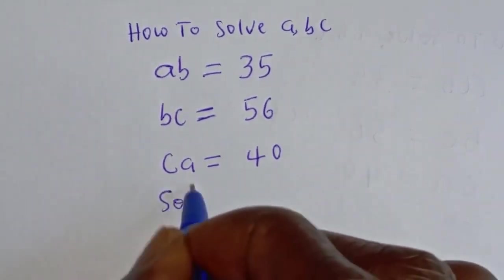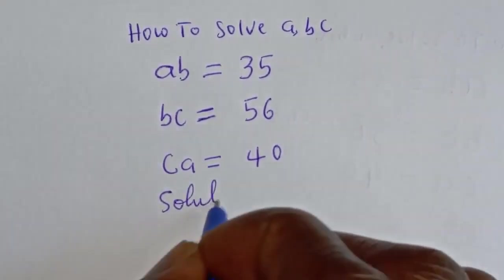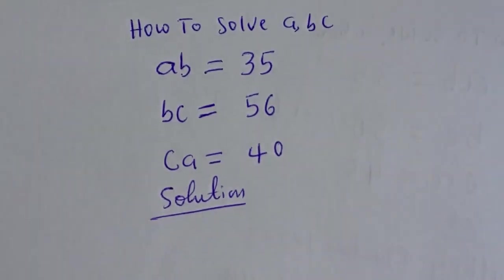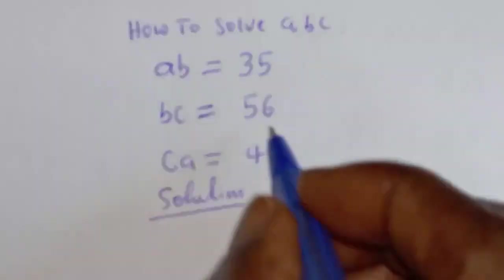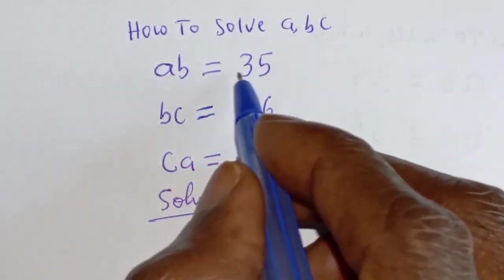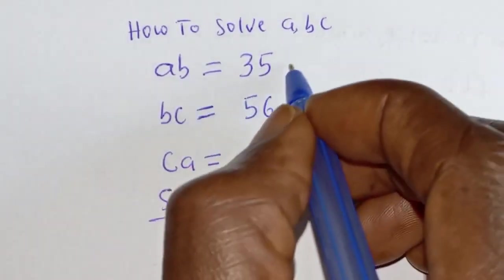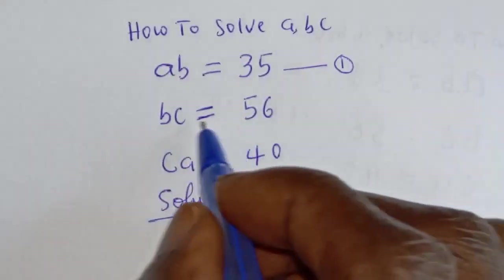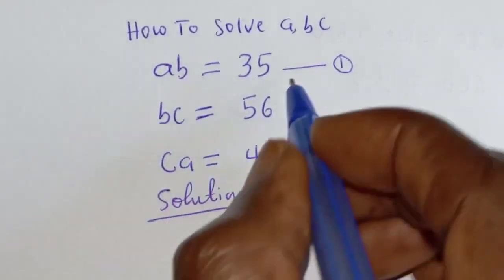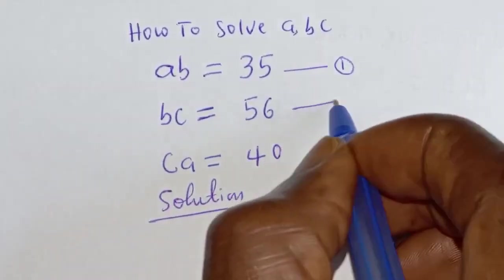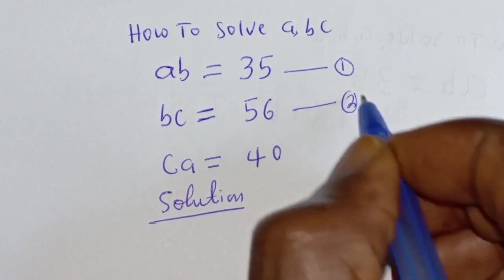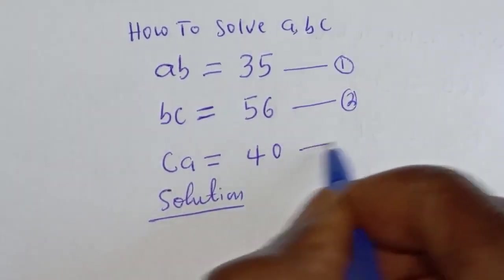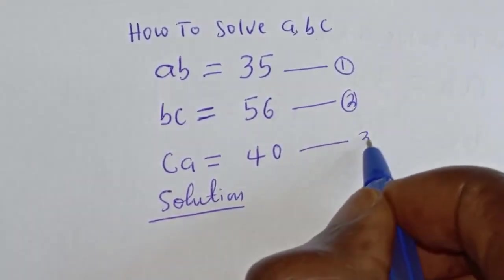Solution. AB is equal to 35 — let's call this equation 1. Then BC is equal to 56 — let's call this equation 2. And CA is equal to 40 — let's call this equation 3.